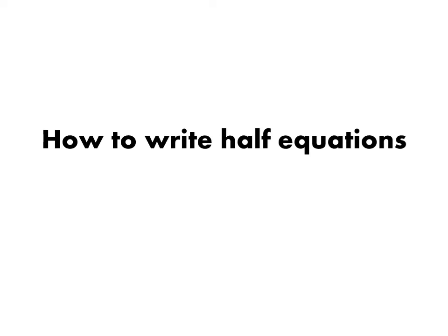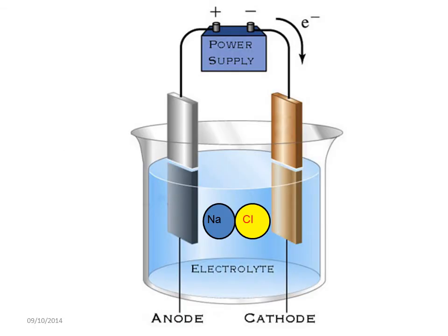This video is all about how to write half equations in electrolysis. To begin with, an ionic compound is split up into its ions. The positive ions move towards the negative electrode and the negative ions move towards the positive electrode.